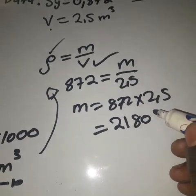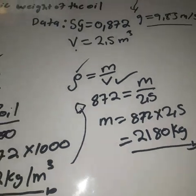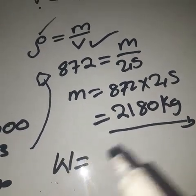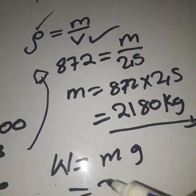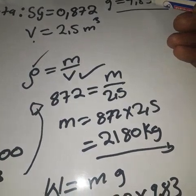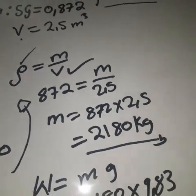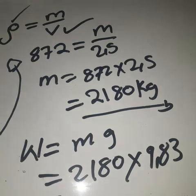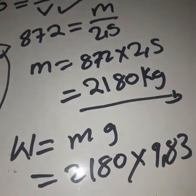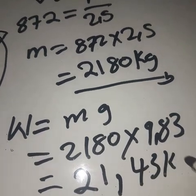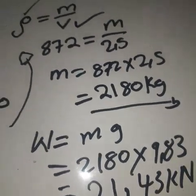That gives us a mass of 2180 kg. Now the question is asking for weight, so we use W = mg. We take 2180 multiplied by 9.83 — remember they said to use 9.83, not the usual 9.81. Using the calculator, we get approximately 21.43 kilo-newtons. That is the answer for part A.